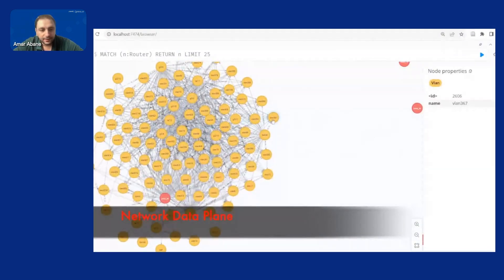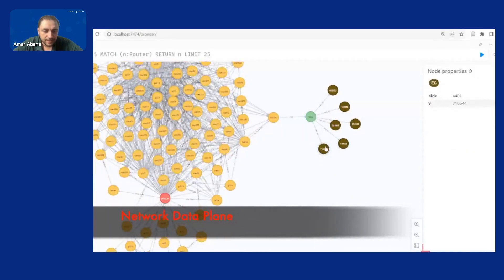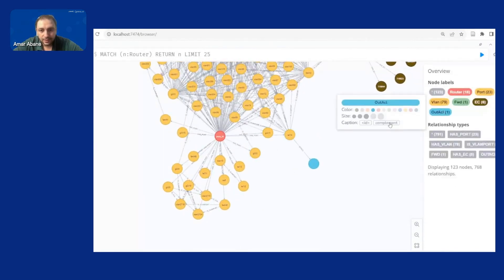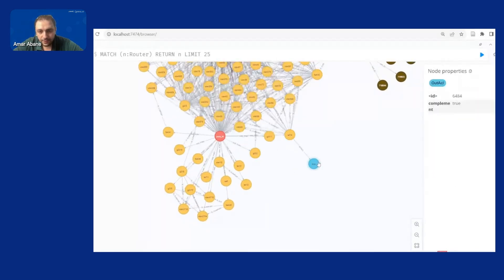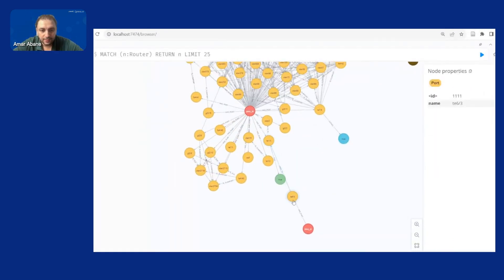This is for the network data plane what you see here are the VLANs and the physical ports and the equivalence classes and the mapping between them in terms of forwarding and filters basically access control list.